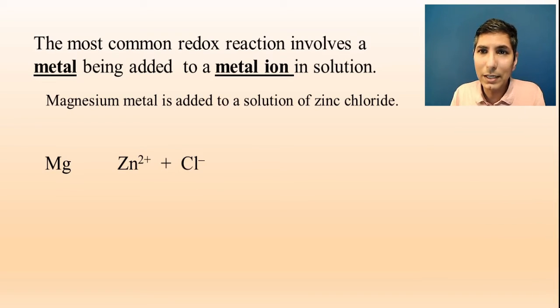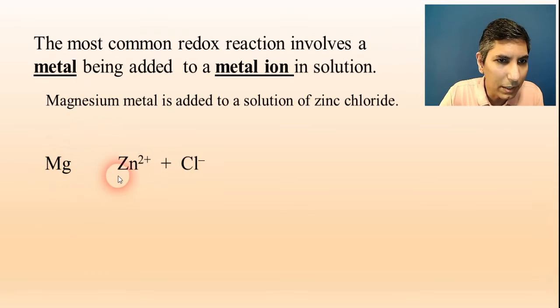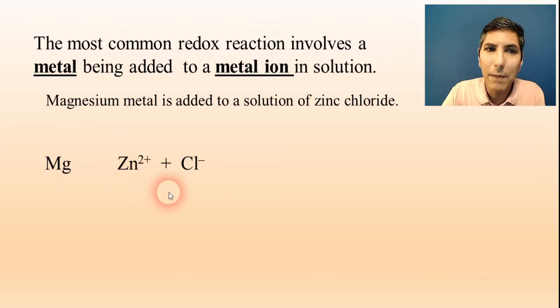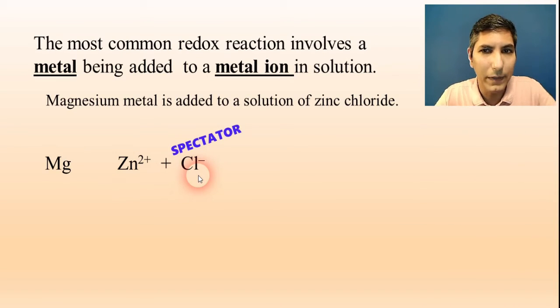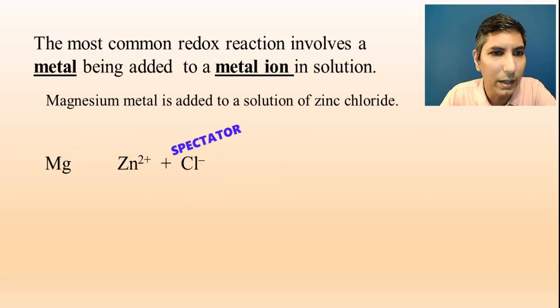When you're writing these redox reactions, you need to understand that if you see a metal, it's going to react with a metal ion. You need to be able to recognize that these two things—the magnesium and the zinc, the metal and the metal ion—are going to react with each other. That means that the chloride is just a spectator ion, so you don't even have to worry about the chloride. That's just sitting on the sidelines.